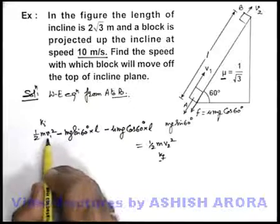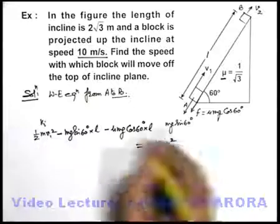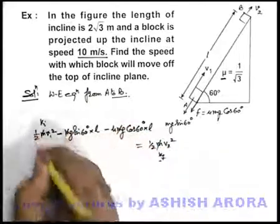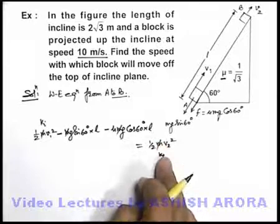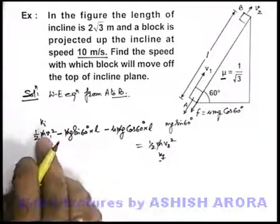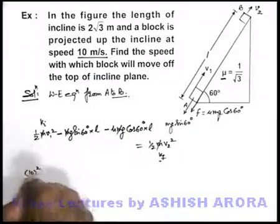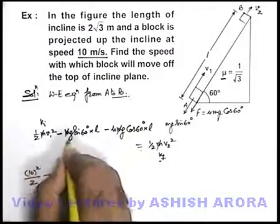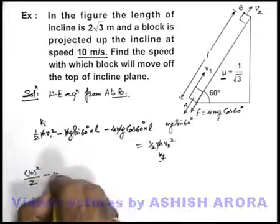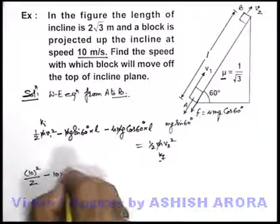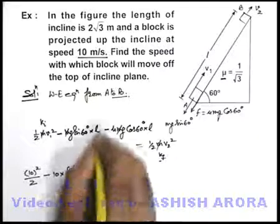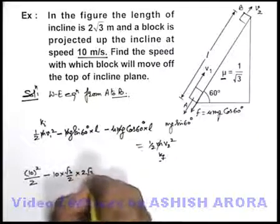We just substitute the values here, before that you can see the values of m will get cancelled out throughout the equation. If we put the value of v1 as 10 meters per second you see, we'll be getting 10 square divided by 2, minus g we can take at 10, sine 60 is √3 by 2, and the length of incline is 2√3 meters.